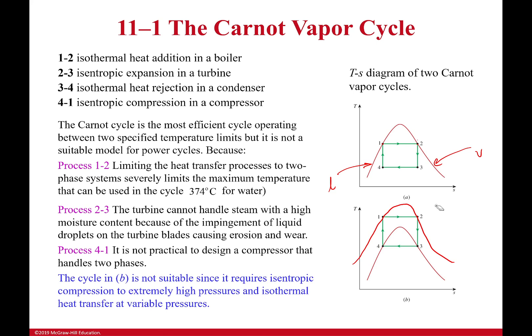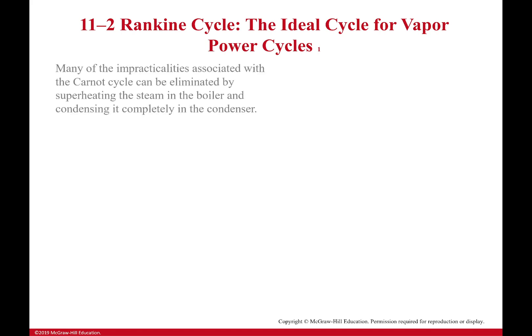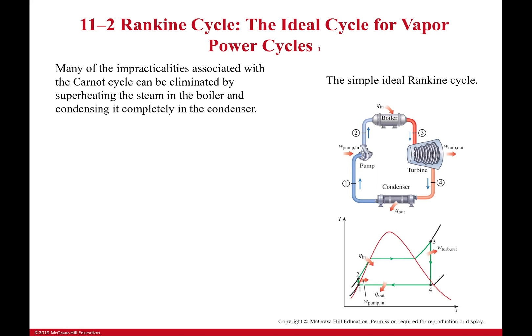So, how do we fix this? Well, we kick the Carnot cycle to the curb. We don't really kick it to the curb. And we use something called the Rankine cycle. Now, this is the ideal cycle for vapor power cycles. And what we're doing here is we're trying to get rid of any of the impracticalities of the Carnot cycle, while still, as best we can, making sure that we have a very efficient cycle. So, let's walk through this real quick.